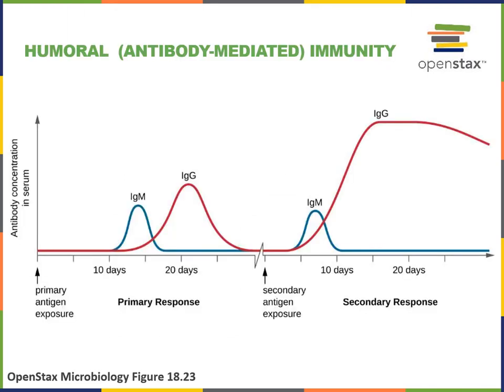Here we can see the time course of the antibody mediated immune response to a primary and secondary exposure to a specific pathogen. Before you've been exposed to the pathogen, there are essentially no antibodies in the blood that could defend against that specific pathogen. But after the primary exposure, it takes around two weeks for the concentration of IgM to rise in the blood.